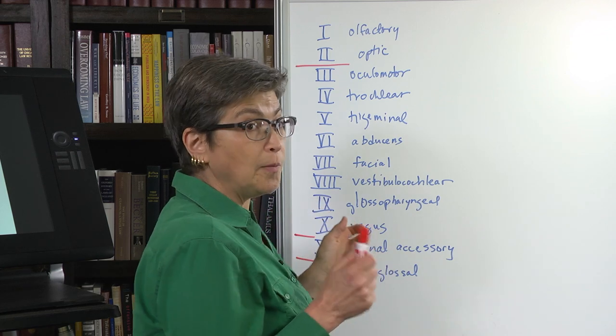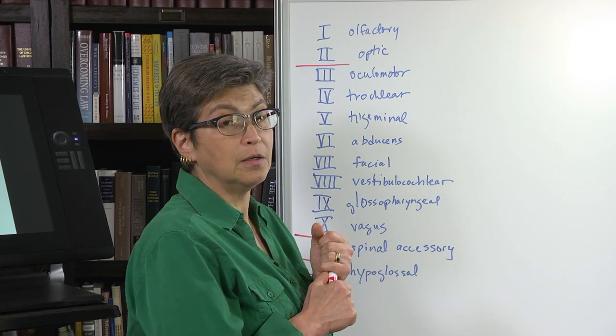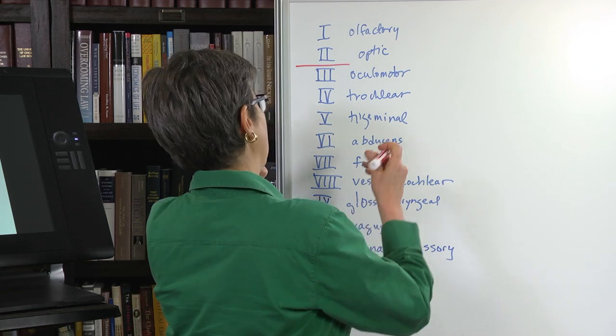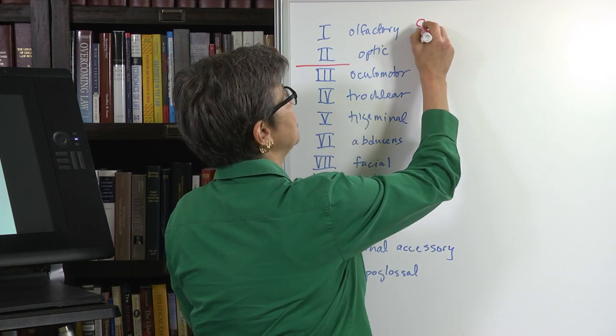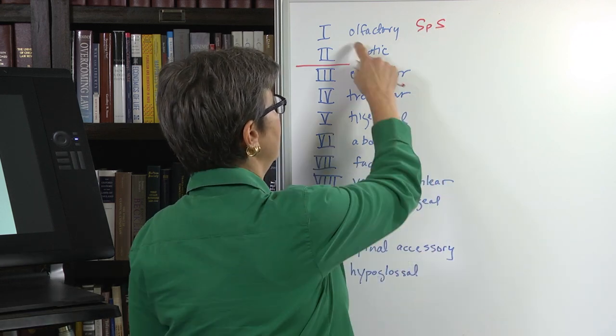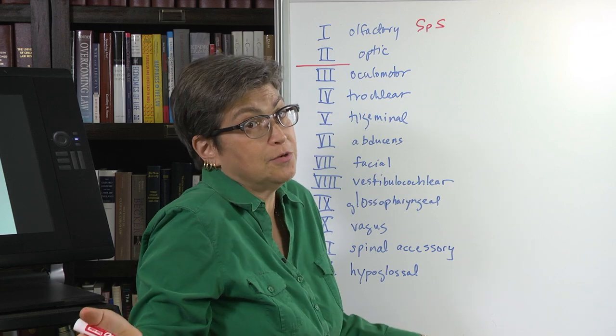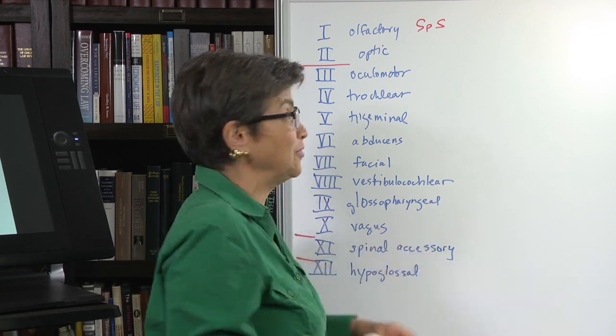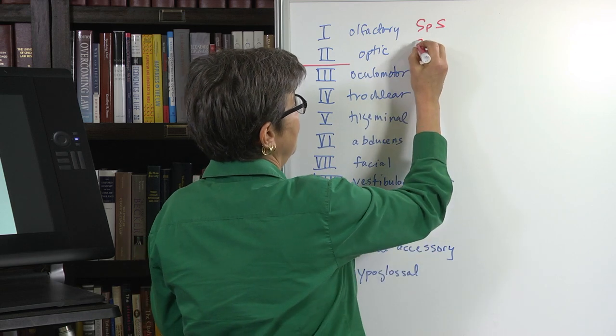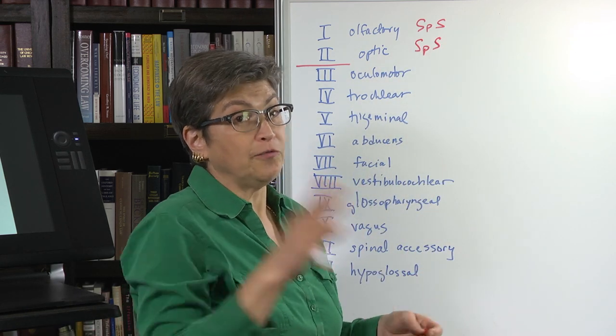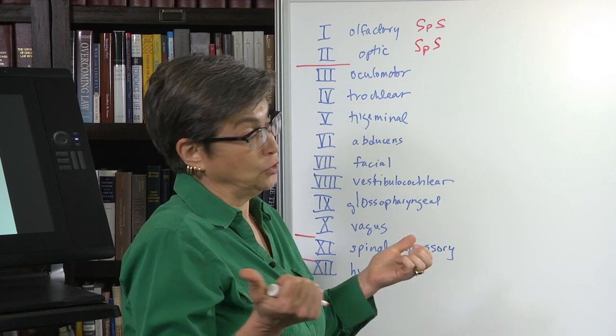So some of them are complicated, but there are a few easy ones. So let's start with the easy ones. Olfactory. It's a special sense. What does it do? It carries olfactory information in from the nose. Really lovely. Optic. Another special sense. What does it do? It carries optical information in from the eyes. Great.